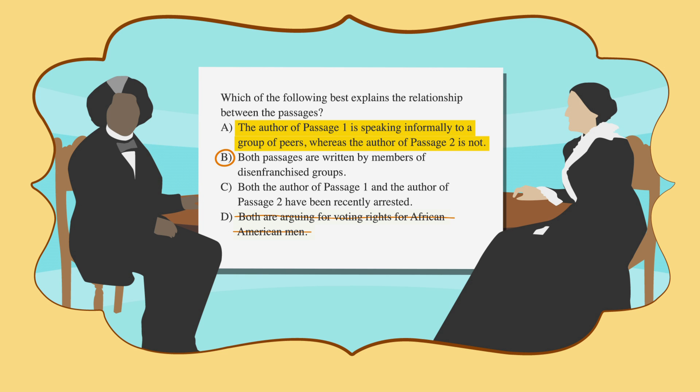Now let's look at answer choice A. The blurb tells us that the title of passage one is an appeal to Congress for impartial suffrage. That sounds pretty formal. Answer choice A contains an adverb. If we look at it carefully, we'll see informally is the opposite of what we'd be looking for. Also, Douglas was appealing to Congress, not a group of peers. So we found two good reasons to cross off answer choice A.